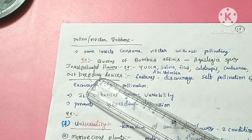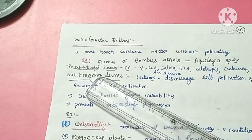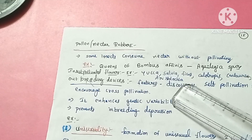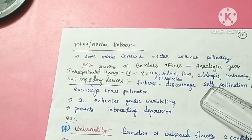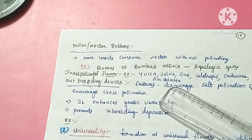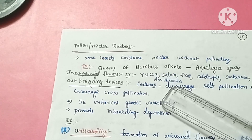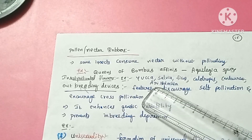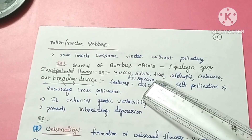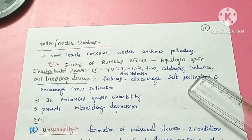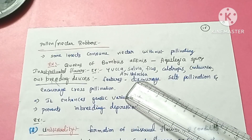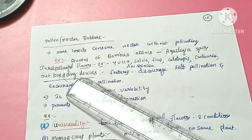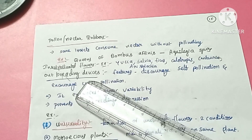Now we will see examples of flowers which are pollinated by insects. The examples are: yucca, salvia, ficus, calotropes, centaurea, and aristolochia. All these are flowers which are pollinated by insects.